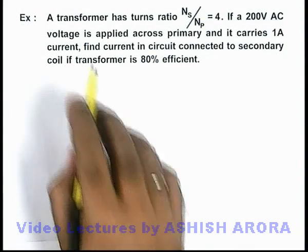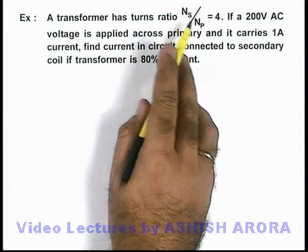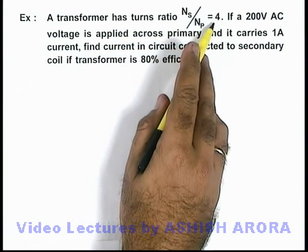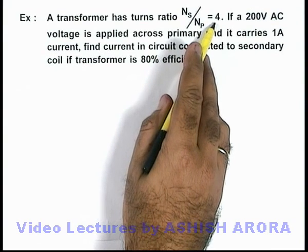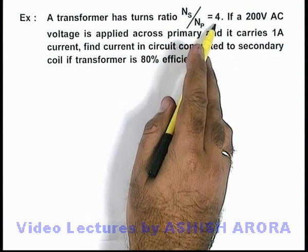In this example, we are given that a transformer has turns ratio Ns/Np, which is the number of turns in the secondary to primary, equal to 4. Here you can see that secondary turns are more, so again it is a step-up transformer.